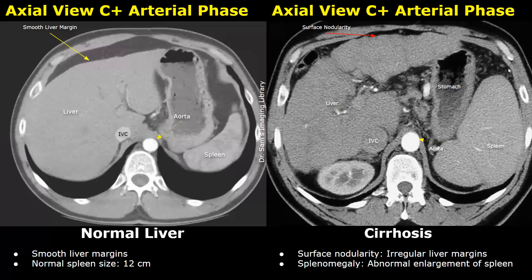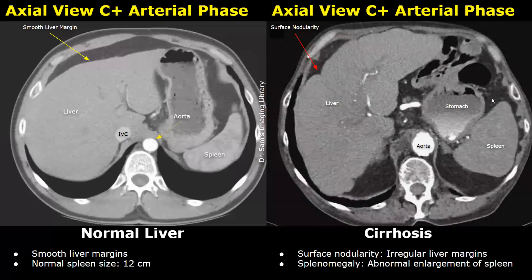Splenomegaly is also present in that case. This is another case of cirrhosis — these are contrast-enhanced images in the arterial phase. Irregular liver margins are seen. The spleen is not fully seen in this image, but splenomegaly was present.